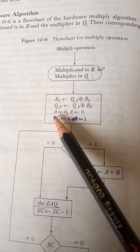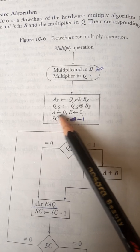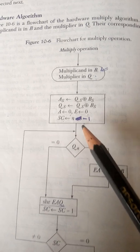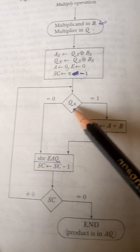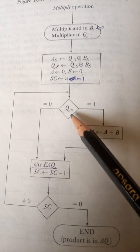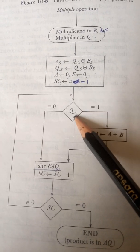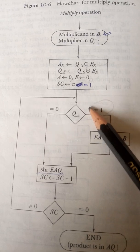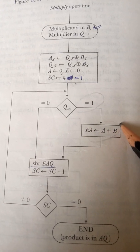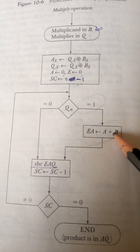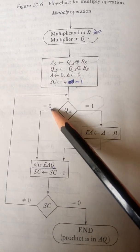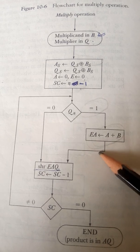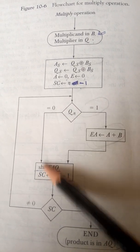Initially A is having zero, means register A is empty, holding zero. E bit is also zero and sequence counter is initiated with N bits. Now you see here we observe the QN bit, that is multiplier's rightmost bit. Then if it is 1, it means we need to add. So multiplicand B is added to A register. If it is 0, then we do not add but only shift.